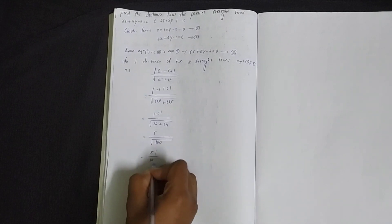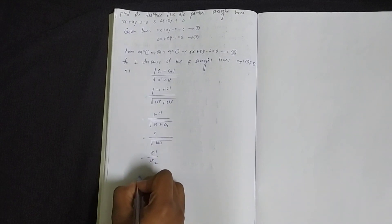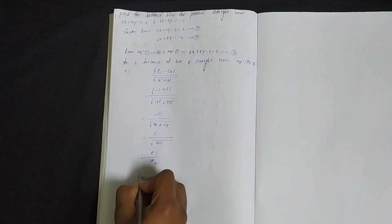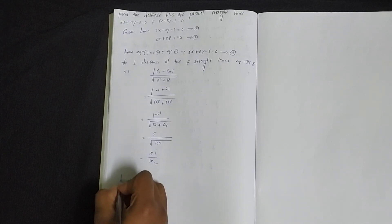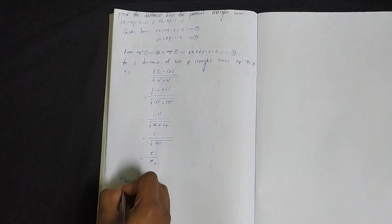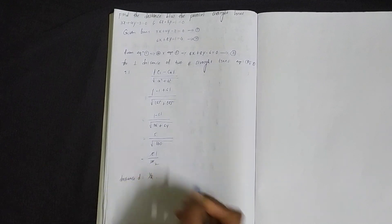5 and 5 cancel, so the distance equals 1 by 2. This is the answer — distance equal to 1/2. This is the problem for today.